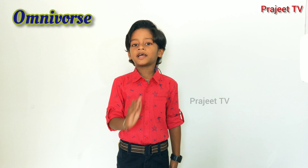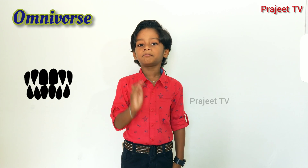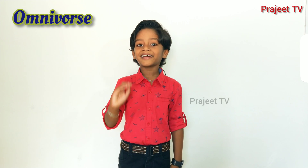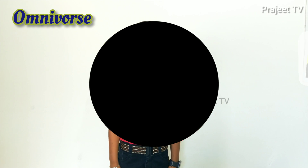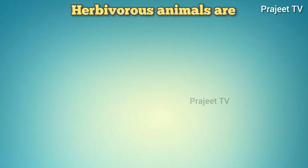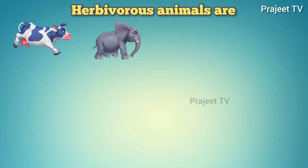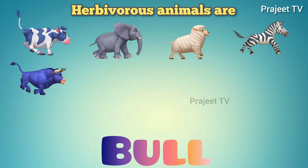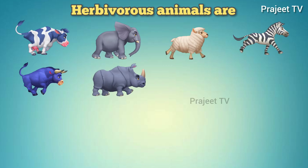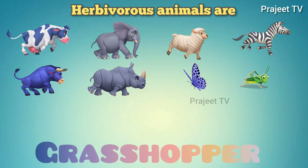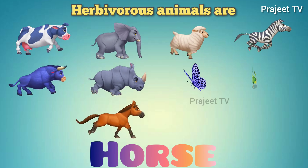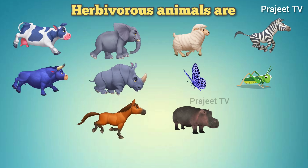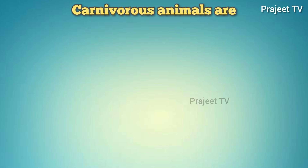Herbivore animals are: Cow, Elephant, Sheep, Zebra, Bull, Rhinoceros, Butterfly, Grasshopper, Horse, and Hippopotamus.